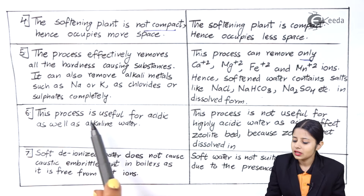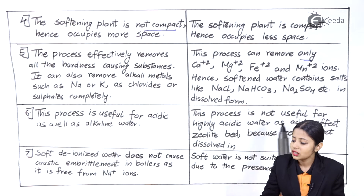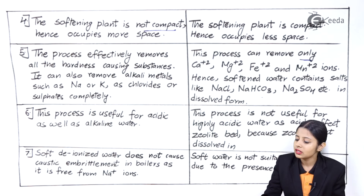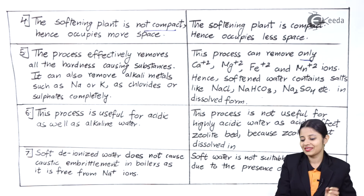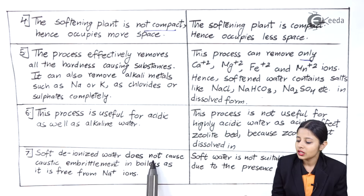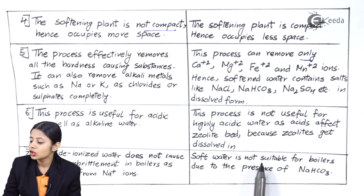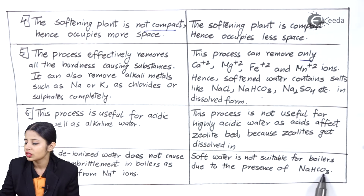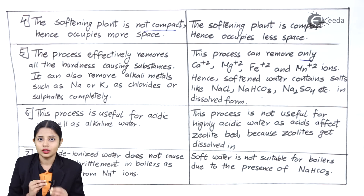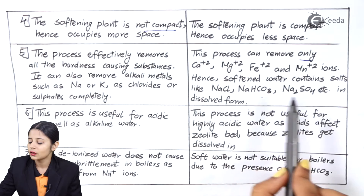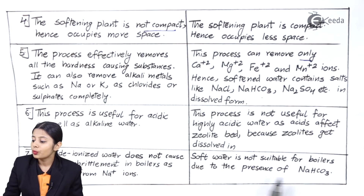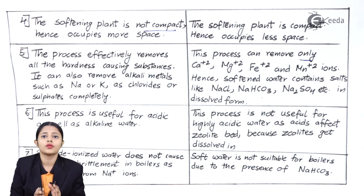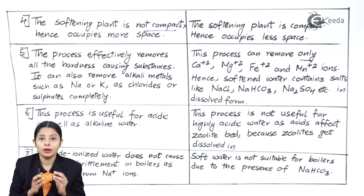Sixth point — The ion exchange process is useful for acidic as well as alkaline water. The zeolite process is not useful for highly acidic water because acids affect and dissolve the zeolite bed. Seventh point — The soft deionized water from the ion exchange process does not cause caustic embrittlement in boilers, as it is free from Na⁺ ions. In contrast, zeolite-treated water is not suitable for boilers due to the presence of NaHCO₃, NaCl, and Na₂CO₃, which can cause embrittlement and cracking, degrading boiler quality.